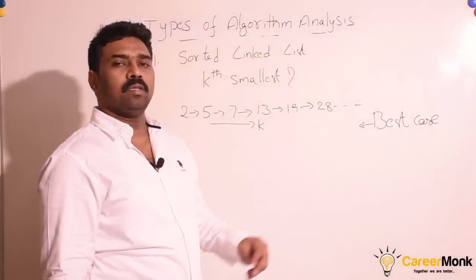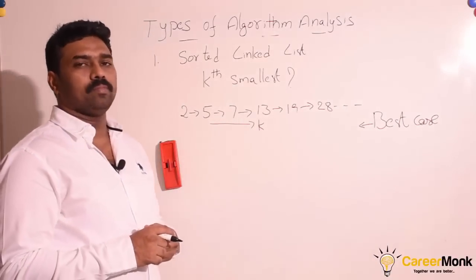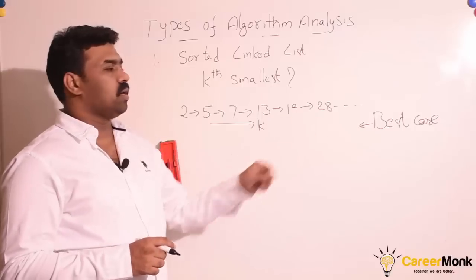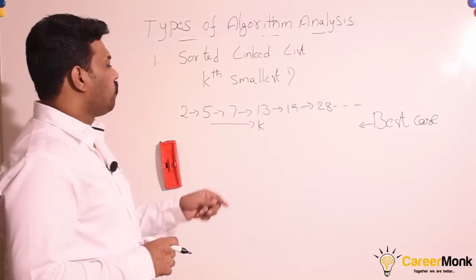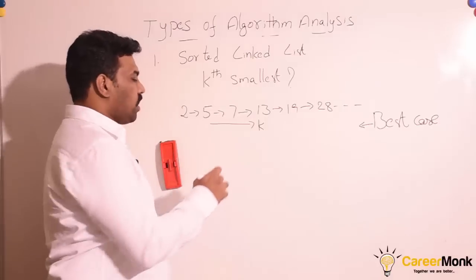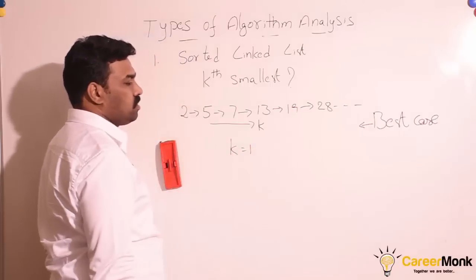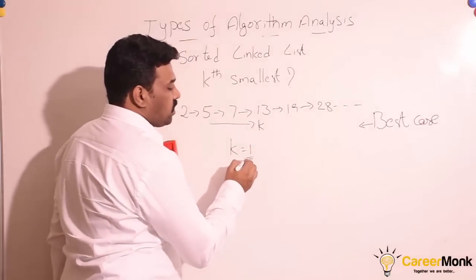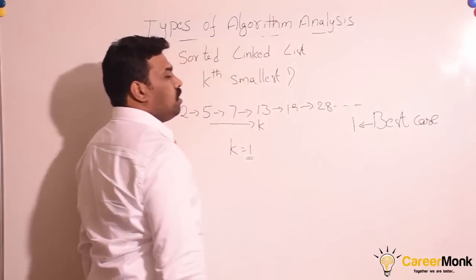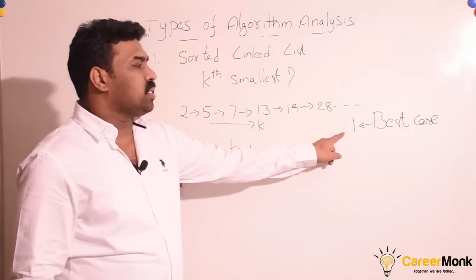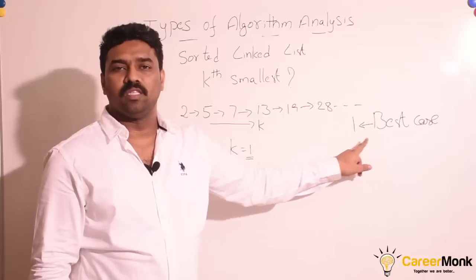From the definition of best case, we need to find the input for which the algorithm consumes less memory and CPU. Since the elements are in increasing order, to reduce CPU time we need to reduce the k value. So for k equal to 1, we are reducing the number of iterations, which is obviously nothing but the best case input. So for the best case, we are getting the running time as 1. The time complexity of the best case for this algorithm is 1.